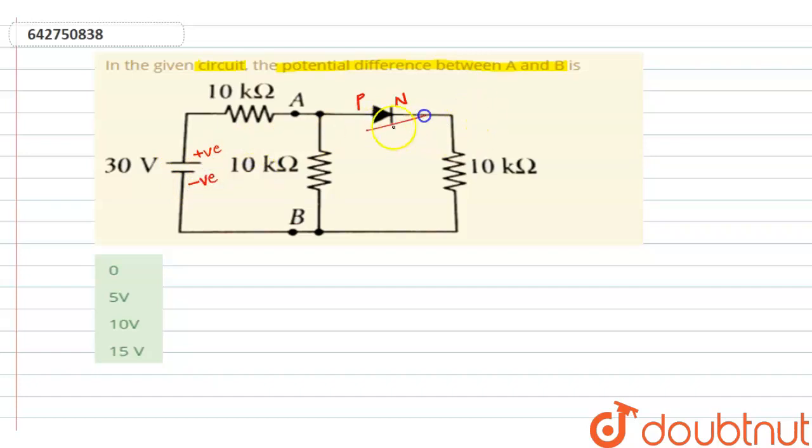We know in case of forward bias, diode resistance is very low. So R is very low, we can take it as zero, so it will be short circuited. Assume this is a single wire, okay?